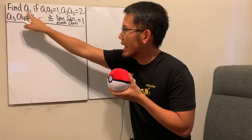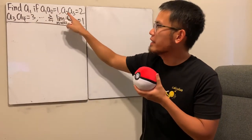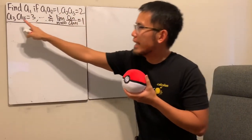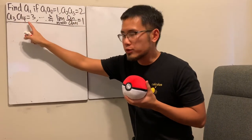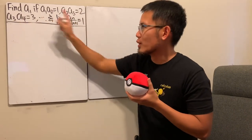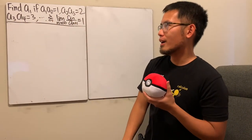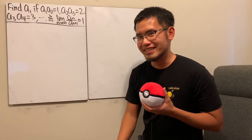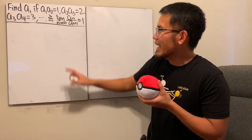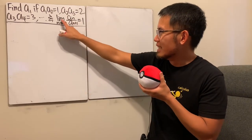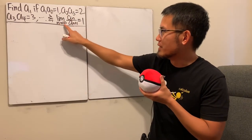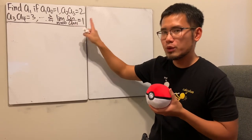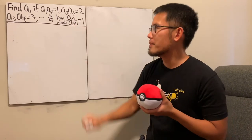We are going to find a1, given that a1·a2 = 1, a2·a3 = 2, a3·a4 = 3, and so on — this is like an infinite system of equations. We are also given that the limit as n goes to infinity of a_n over a_{n+1} is equal to 1.